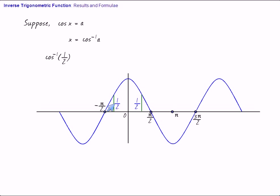Now, both are equidistant from origin. This is pi by 3. This is minus pi by 3. So, both are equidistant from origin. So, there is a conflict. There is a ladai between pi by 3 and minus pi by 3.